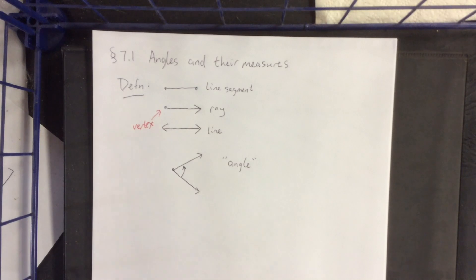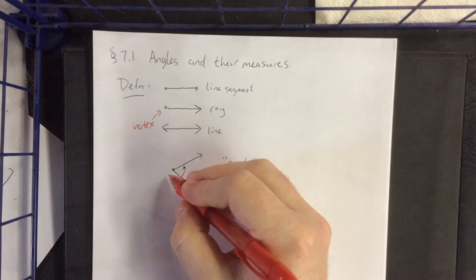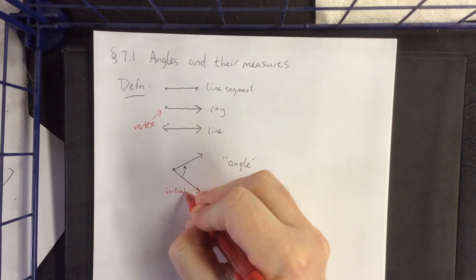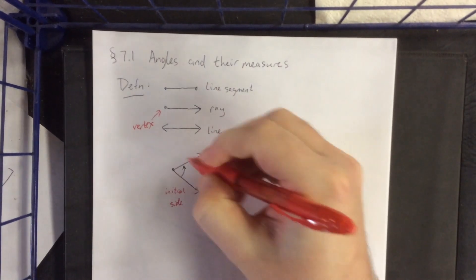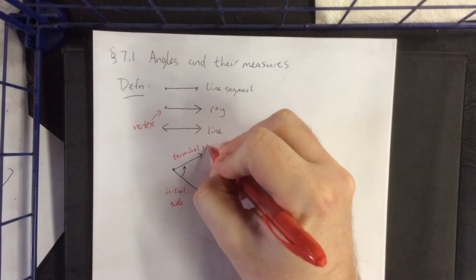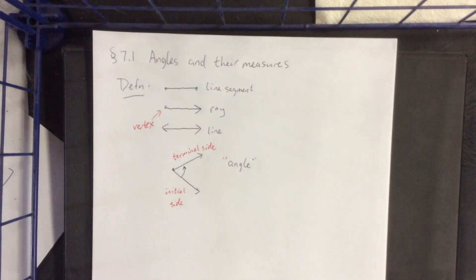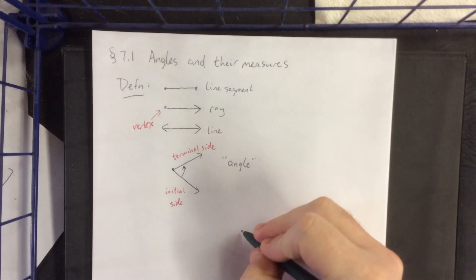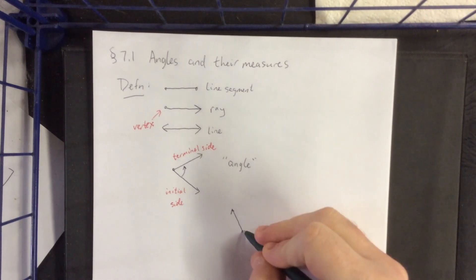There are special names for these sides then. The side that we rotate from is called the initial side. And the side that we rotate to is referred to as the terminal side. We always go from initial to terminal. Now, just because we have a particular angle doesn't mean that there aren't multiple ways that we can rotate from an initial side to a terminal side.